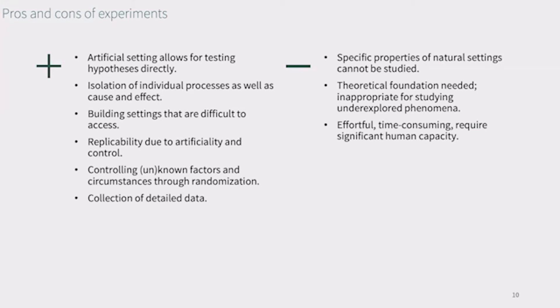Now, turning towards the disadvantages, given the artificiality of experiments, the method is not suited for studying specific properties of natural settings. We already noted that experiments will only work with a good theoretical foundation. Think about theories as a description of the structure and conditions very needed for a particular phenomenon to occur. Then experiments must reconstruct these structures and conditions in such a way that the phenomenon will actually occur and become measurable. So, if you're missing a theoretical foundation, we lack grounds for conducting an experiment.